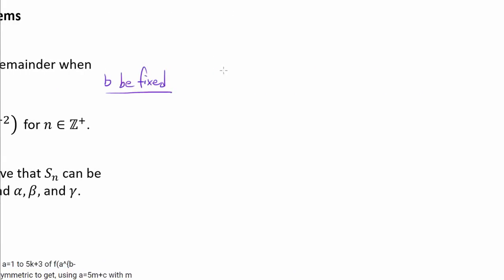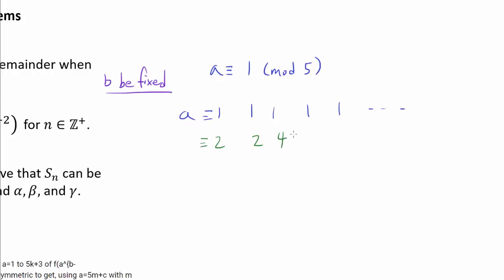Let's think about what happens when we apply f to a raised to 4 consecutive integer powers. When a is congruent to 1 mod 5, a to any power is always 1. When a is congruent to 2 mod 5: 2^1=2, 2^2=4, 2^3≡3, 2^4≡1 mod 5, and then 2, 4, 3, 1 repeats over and over again.